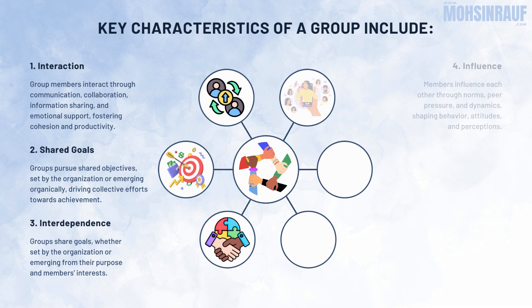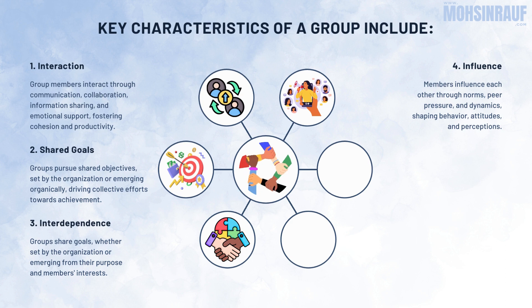4. Influence. Group members exert influence on one another through social norms, peer pressure, and interpersonal dynamics. This influence can shape individual behavior, attitudes, and perceptions within the group context.